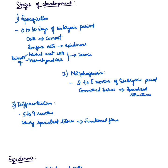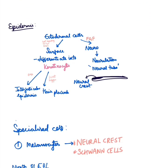The second stage is the morphogenesis phase — the early fetal period from the second to fifth month of embryonic life. During this phase, the committed tissues from the specification stage further form their specialized structures, such as the various layers of the epidermis, epidermal appendages, division of the dermis into papillary and reticular dermis, and formation of subcutaneous vessels. The third stage is the differentiation phase, from the fifth to ninth month, where newly specialized tissues become processed into their fully mature, functional forms.